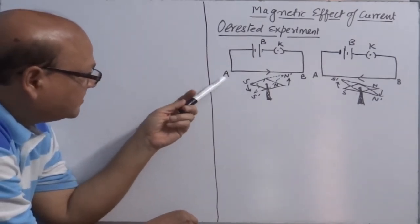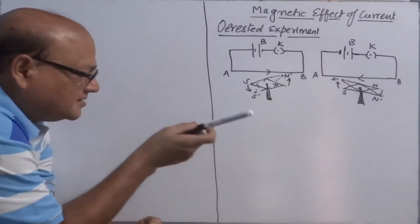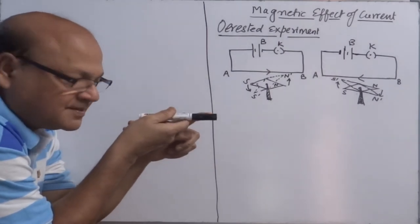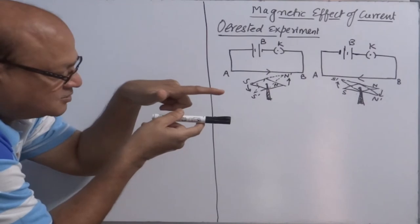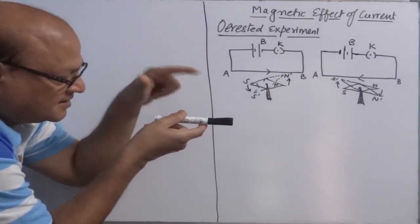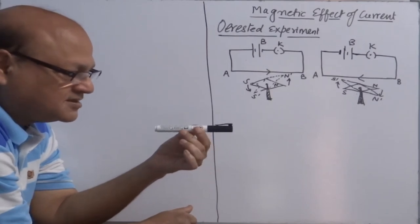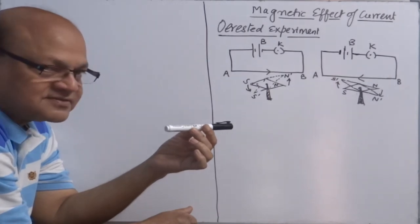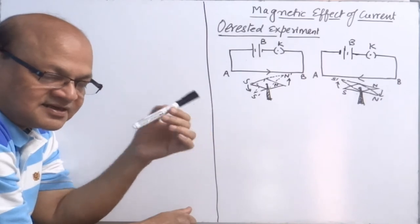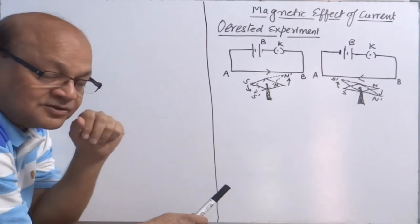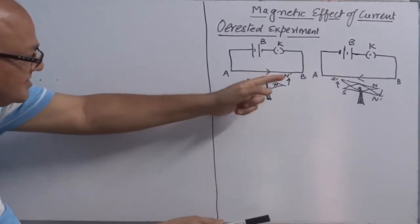Observation 1: When current is passed through conductor AB from A to B, it is observed that the compass needle deflects. Suppose the black end is the north pole and the other side is the south pole of the magnetic needle. When current passes through conductor AB right over it, the compass needle deflects — north moves one side, south moves the other. This deflection in the compass needle indicates experimentally that there is a magnetic field around it. So the deflection is because of the passage of current through the conductor.